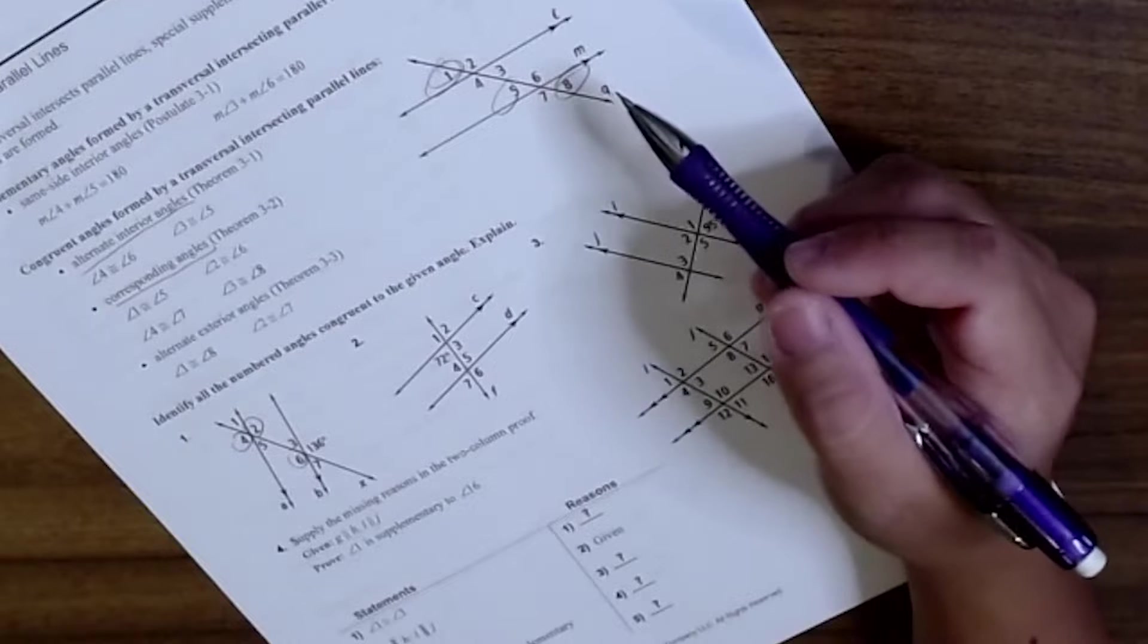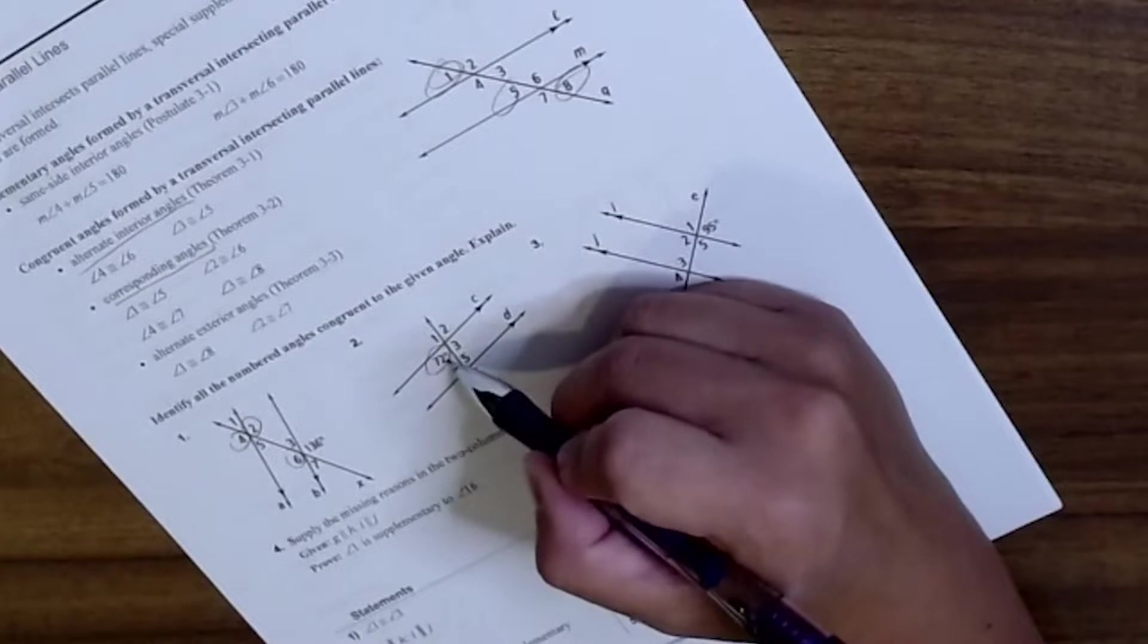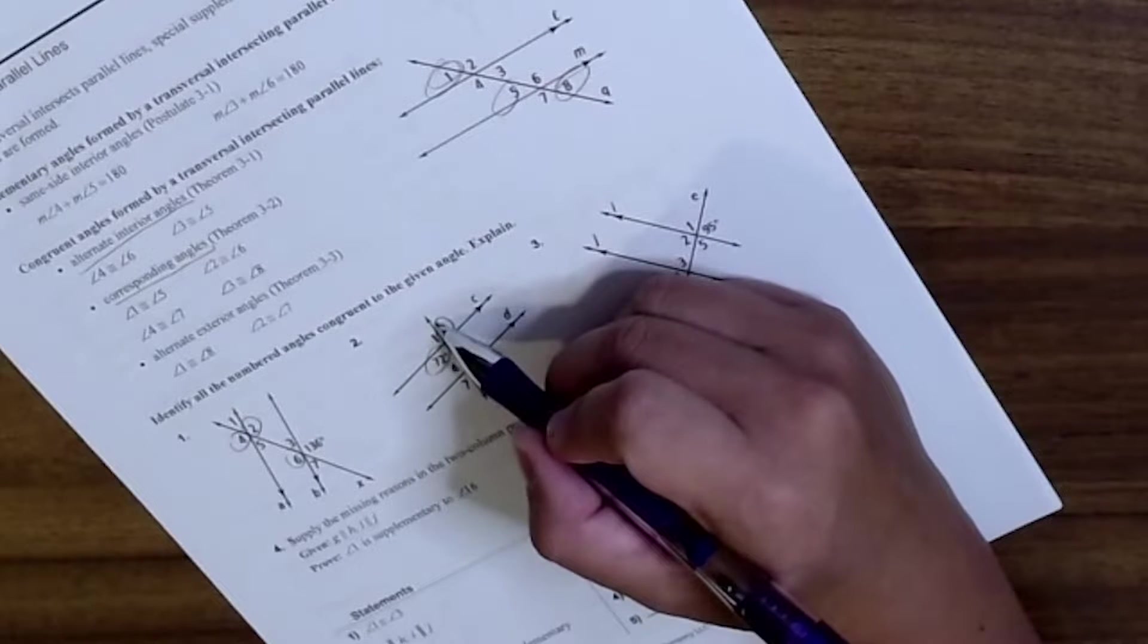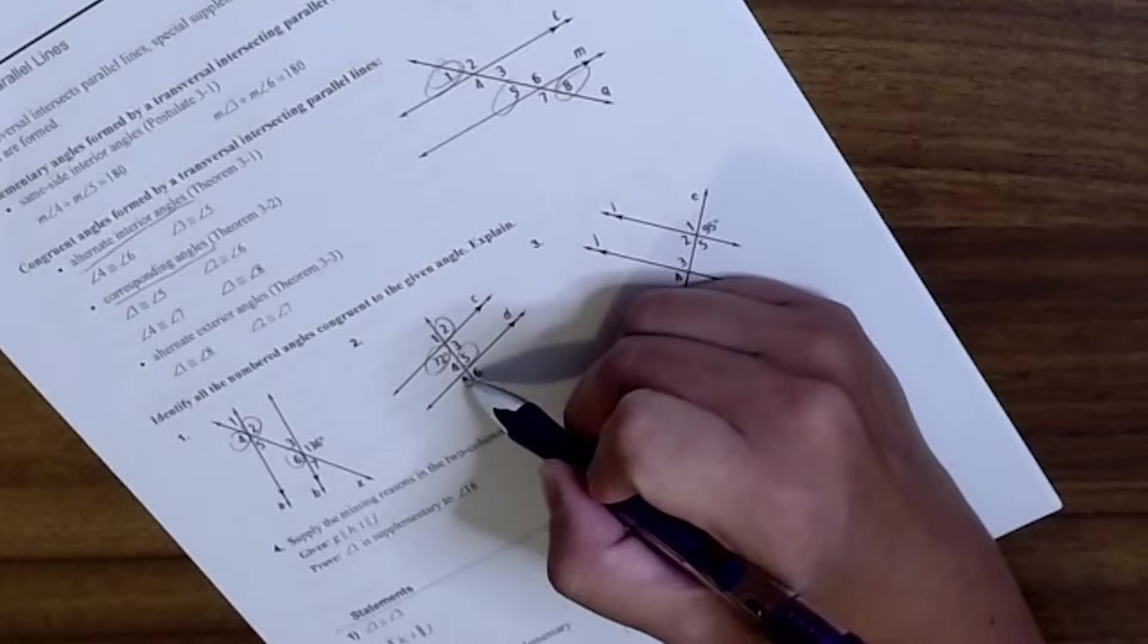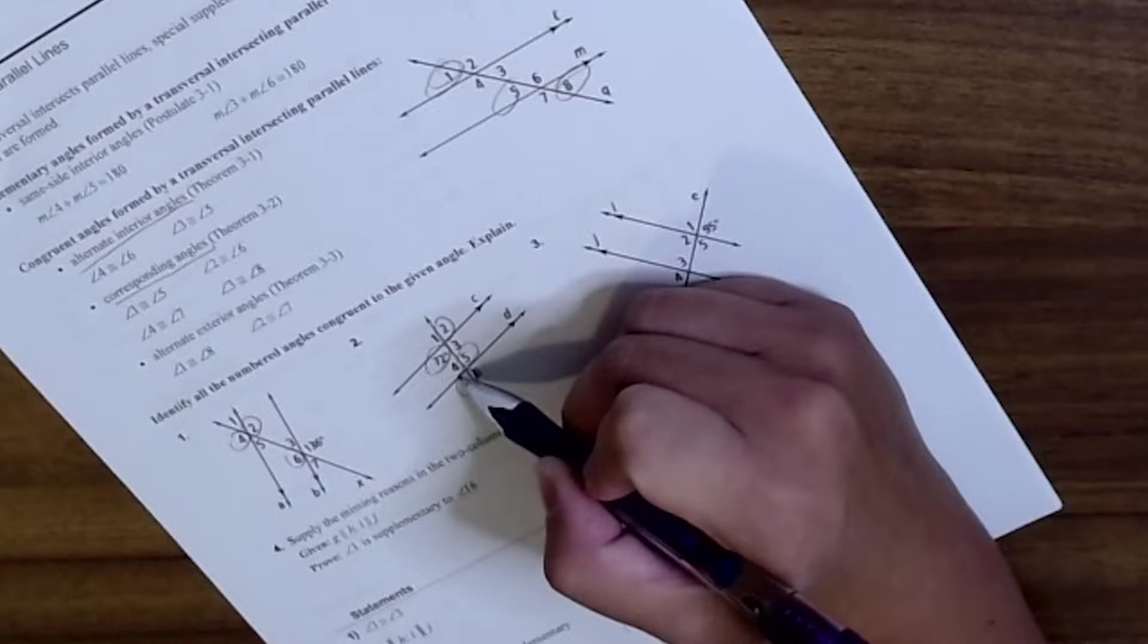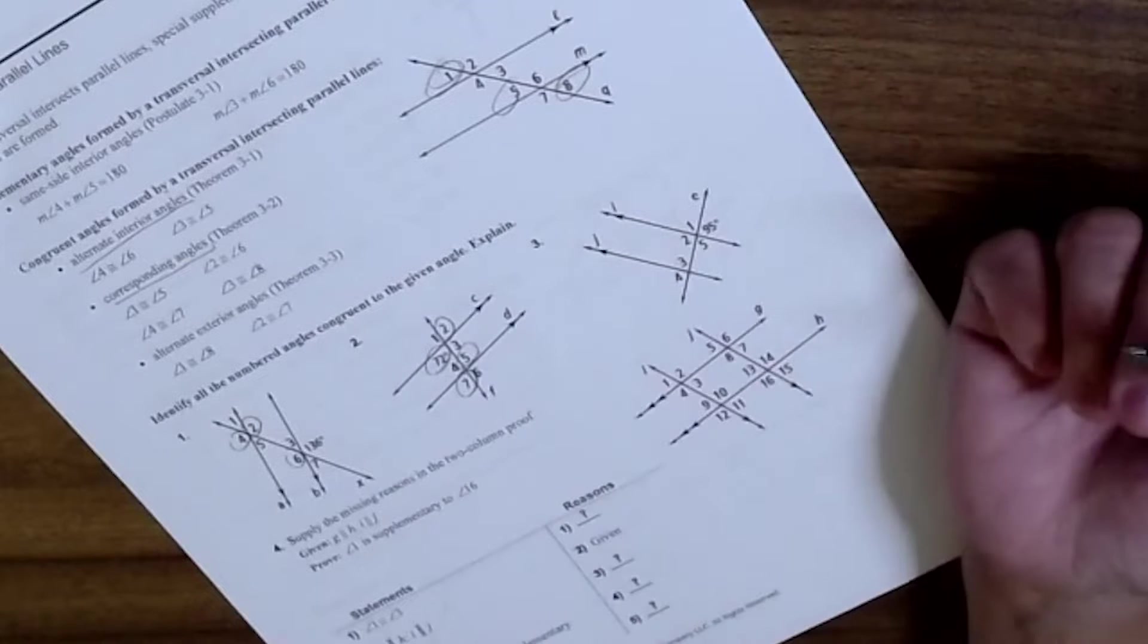So given this angle 72 here, 2 is congruent because they're vertical, alternate interior makes 5, and then vertical angle is 7 here.